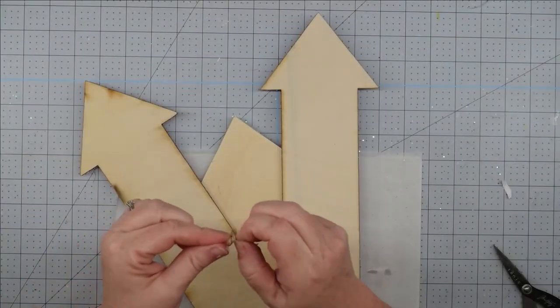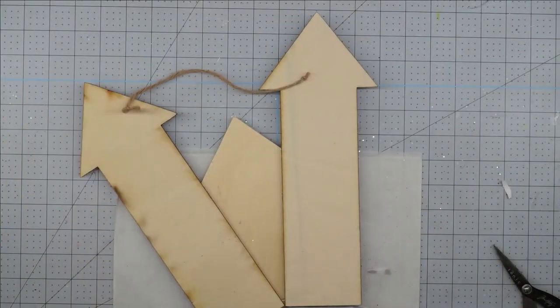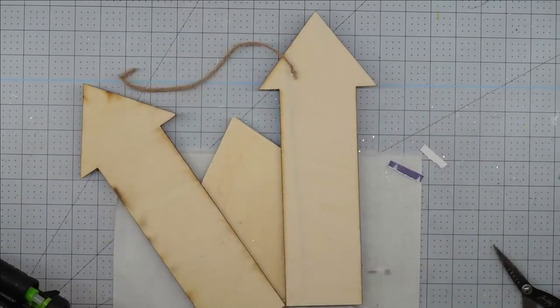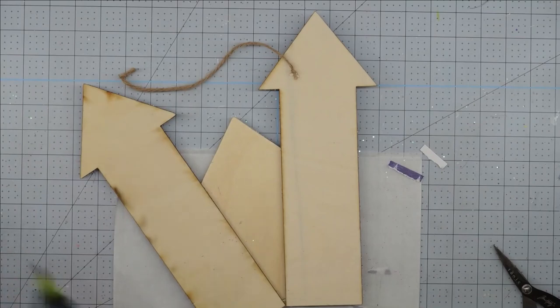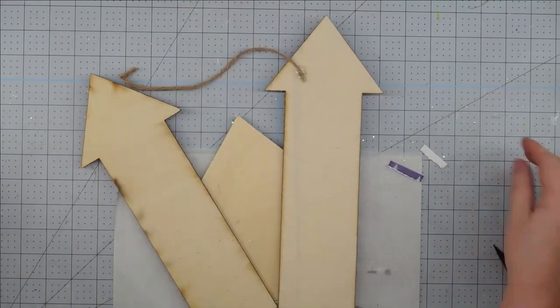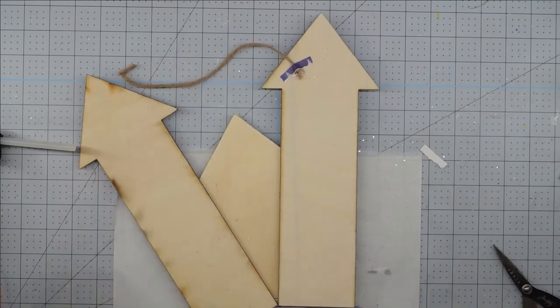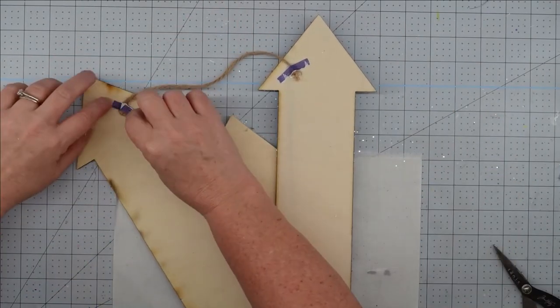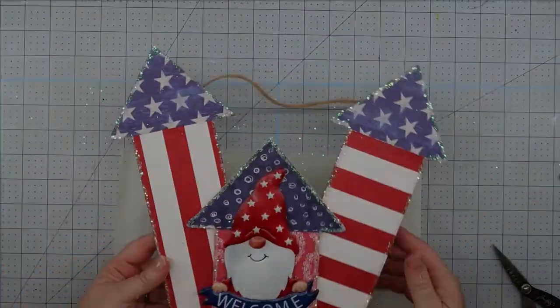The last thing I need to do is add a hanger. I'm going to take that twine we cut off and retie a knot in the end. Then we're just going to flood each end with some hot glue, and I tore off a little piece of my scrapbook paper to go over that. That's just going to help hold this in place better. Once you get your hanger on, this project is complete.